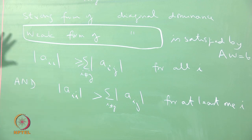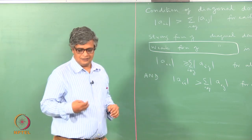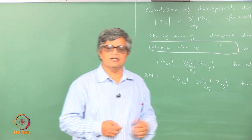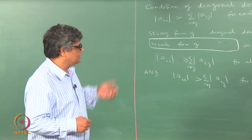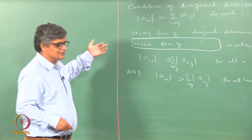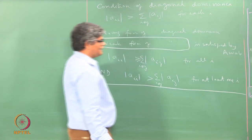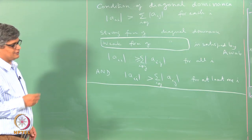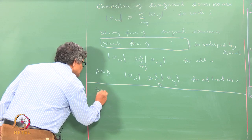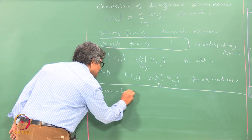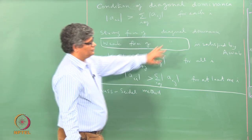The weak form is satisfied. This often arises in equations encountered in CFD, though not in all cases. This is a very desirable form because when you have this condition satisfied, a number of special techniques can be used to solve these Aw equal to b type equations. We make use of one such method known as the Gauss-Seidel method for the solution of these equations.